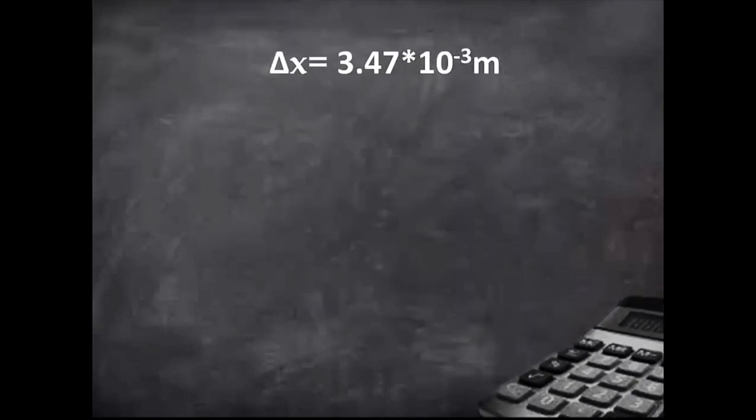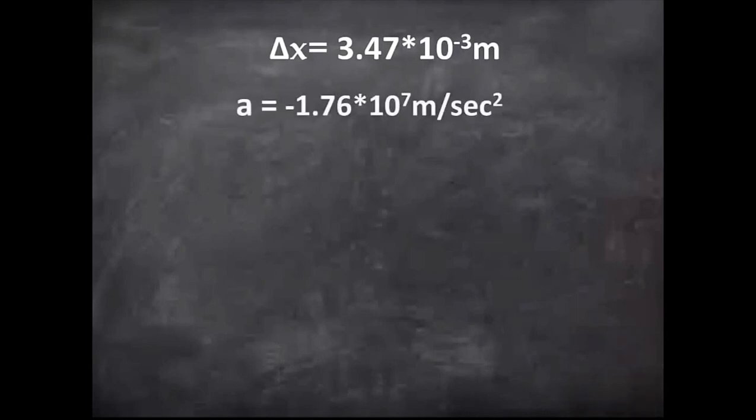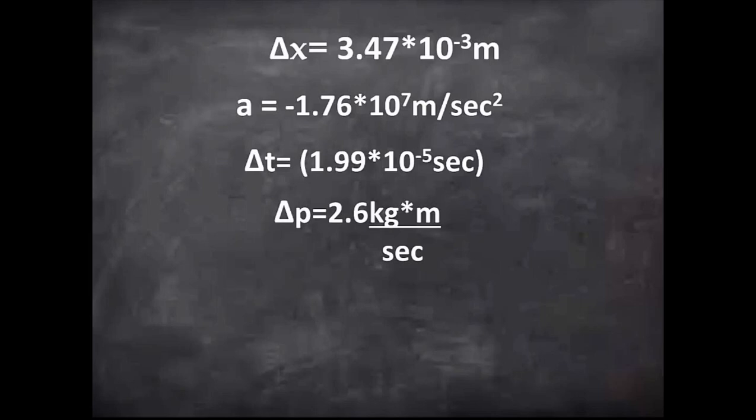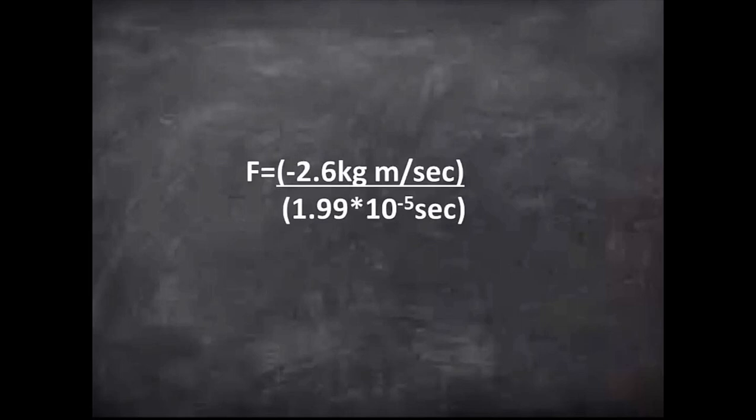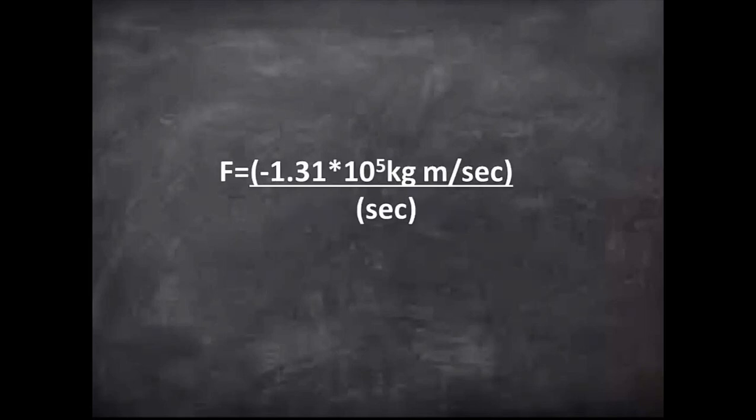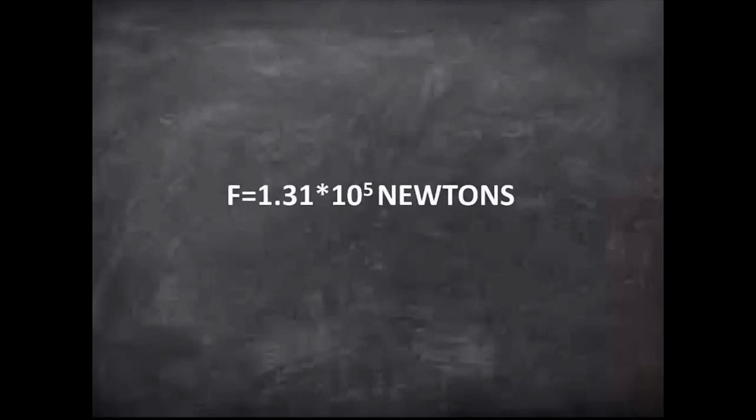Now I'm going to save you the math on these next calculations and just give you the answers. Acceleration worked out to negative 1.76 times 10 to the seventh meters per second squared. Delta t equals 1.99 times 10 to the negative fifth seconds. Change in momentum or delta p equals 2.6 kilograms meters per second. And I'm just going to skip to the last step of the last calculation and show you that, because there is a pretty remarkable result. So you divide this, you have force equals negative 2.6 kilograms meters per second divided by 1.99 times 10 to the negative fifth seconds. This works out to this, which is the same as 1.13 times 10 to the fifth newtons.